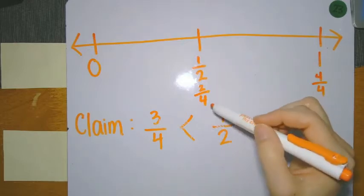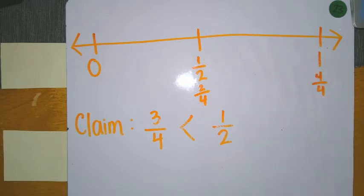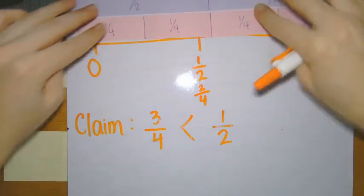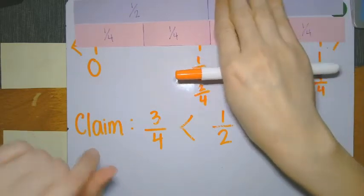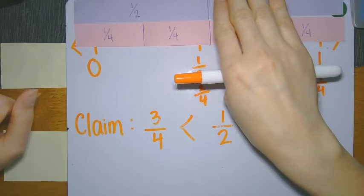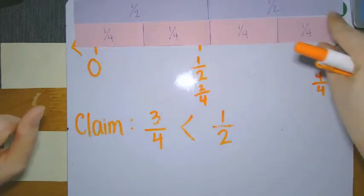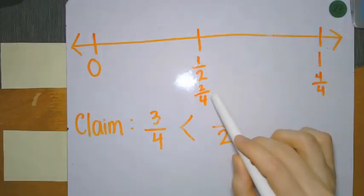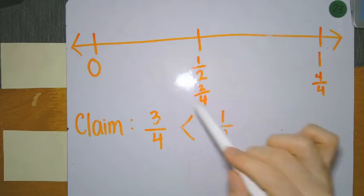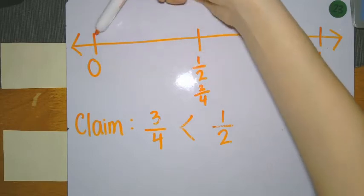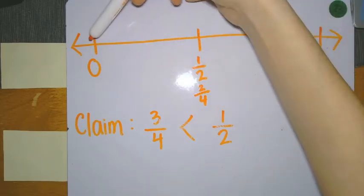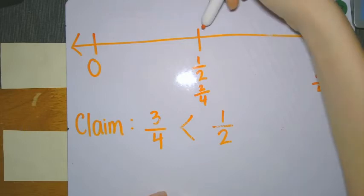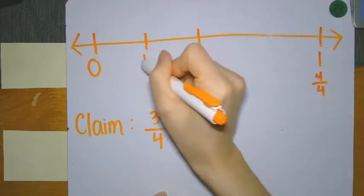I said two fourths is equivalent to one half because on the number line — and I'll demonstrate on our fraction strips — one half is the same amount of distance as two fourths. That means they are equal distance to one whole. So now I have two fourths plotted. I need to figure out where my one fourth and three fourths go. The distance between zero and two fourths is only one space, so exactly halfway between zero and two fourths is where one fourth goes.